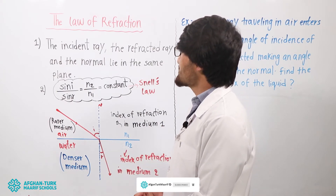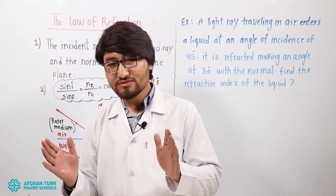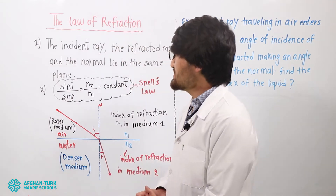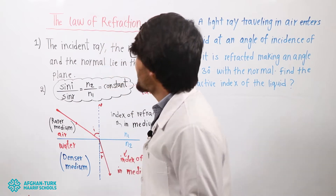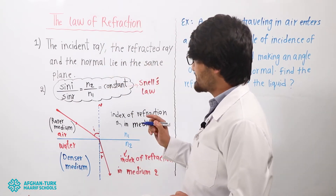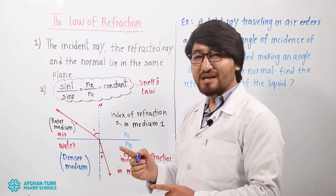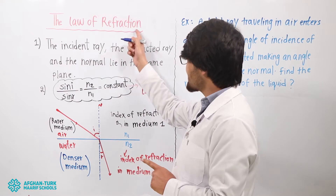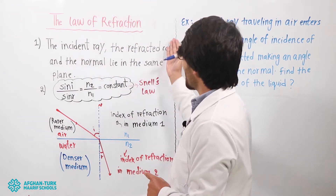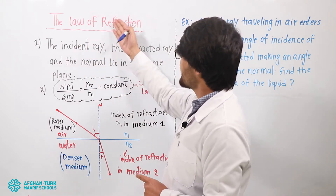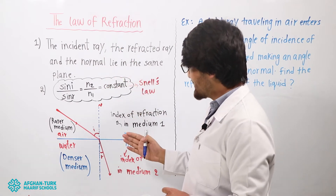The law of refraction. We have two laws of refraction. Number one: the incident ray, the refracted ray, and the normal line are in the same plane. The same plane means the same surface. See, the board is a plane — we can say the board is a surface, a kind of plane.